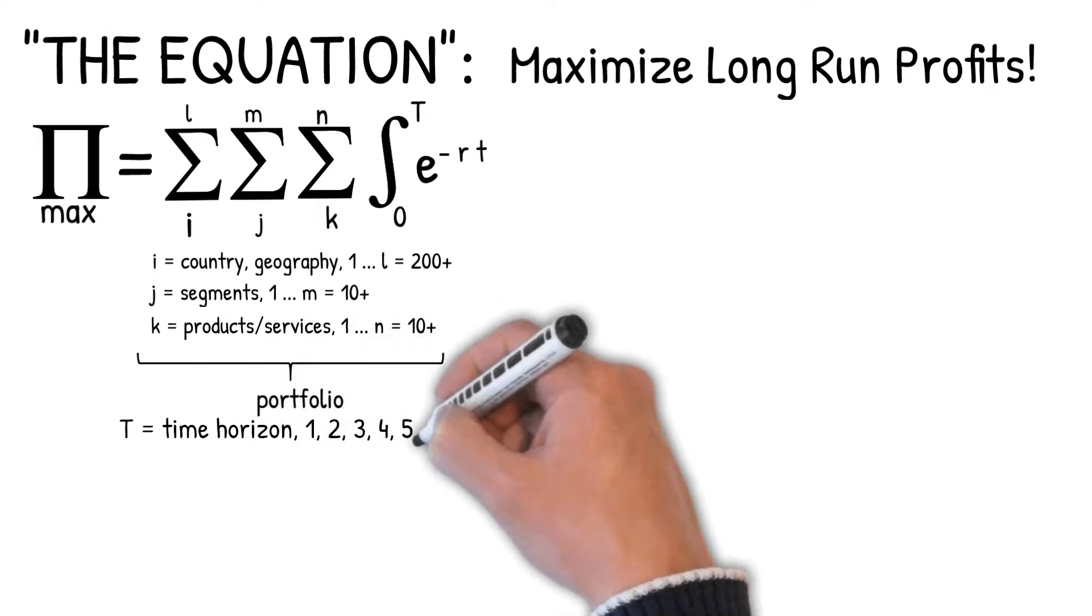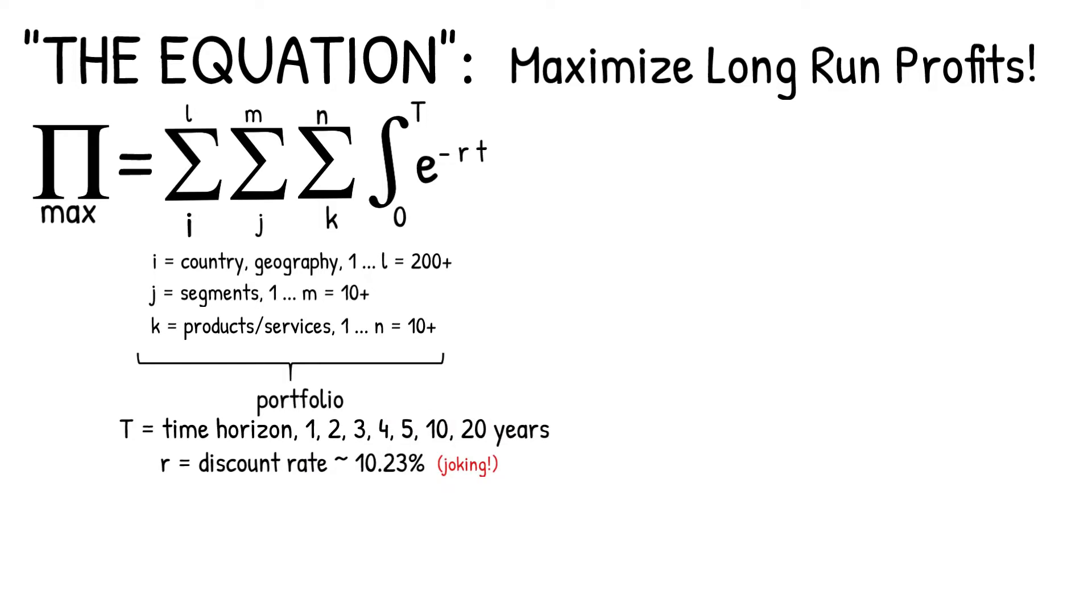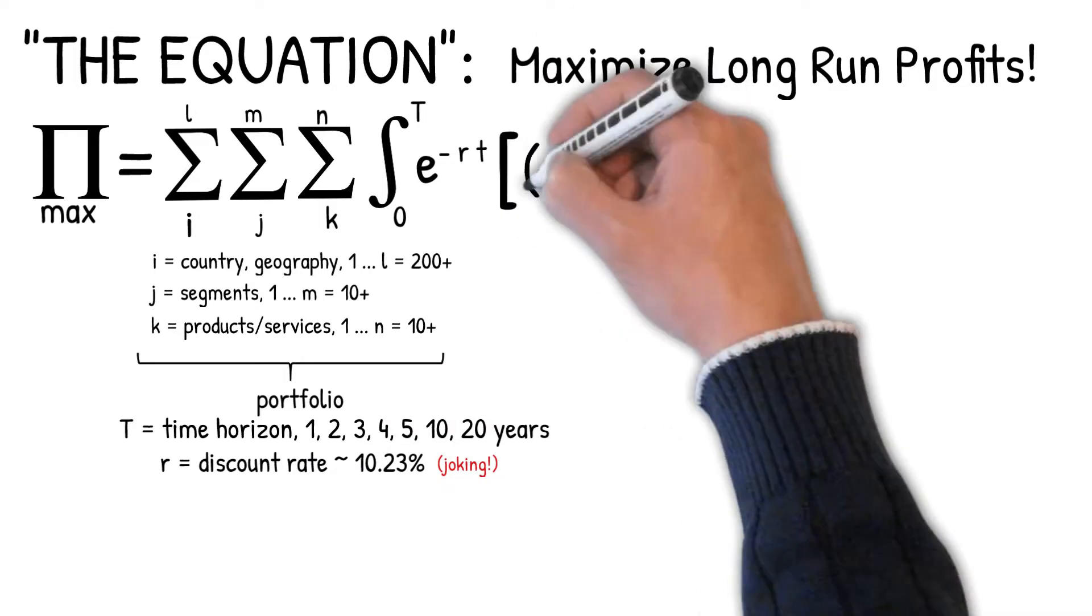We're going to discount those cash flows using a discount rate. If you're not sure, just put 10% and add 0.23 to make it look like you calculated it.